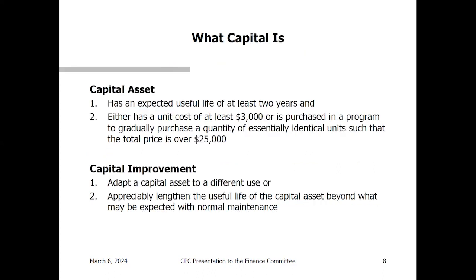The committee has a specific definition of capital: an item with an expected useful life of at least two years and a unit cost of $3,000 or more, or purchased in a program to gradually purchase a set of identical or nearly identical items totaling $25,000 or more. These thresholds have been in place a long time and we're looking at eventually making changes, but this is what we have for this year.